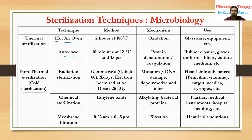In the hot air oven method, if we want to sterilize any glassware or equipment, we have to use it for two hours at 180 degrees Celsius. Hot air is used to sterilize various glassware and equipment for two hours at 180 degrees Celsius — this is the minimum requirement to get a sterilized product from a hot air oven.